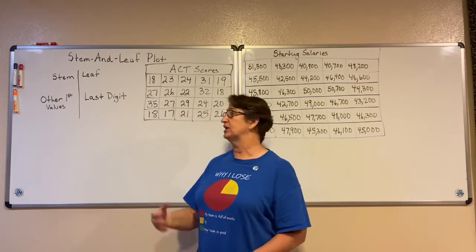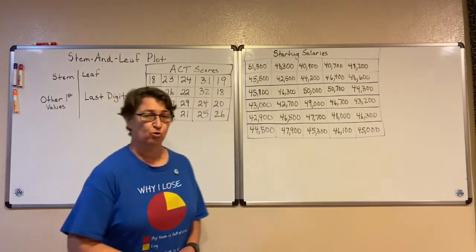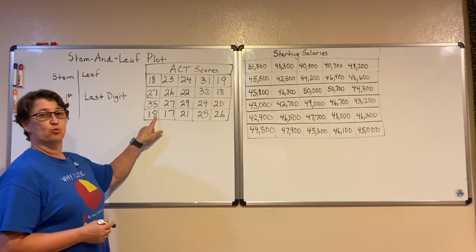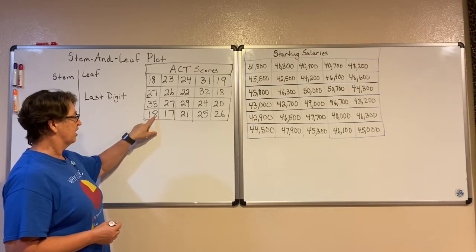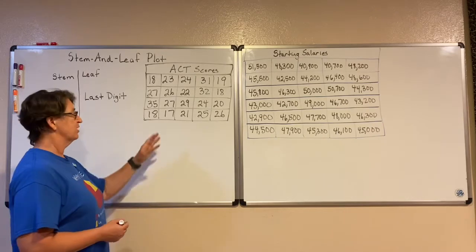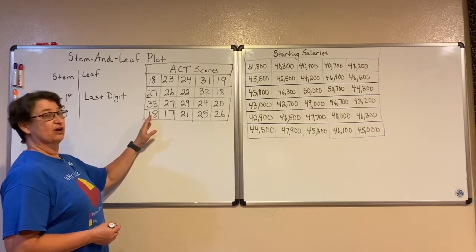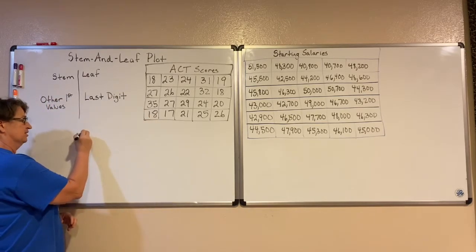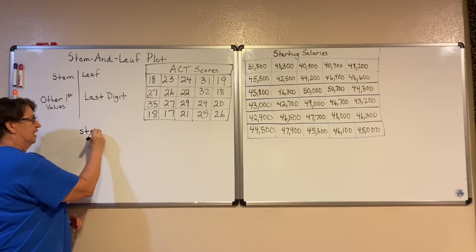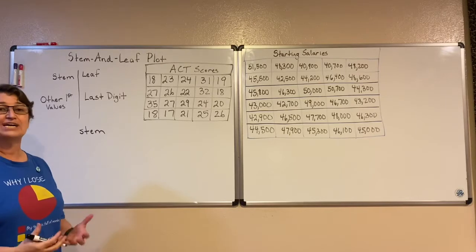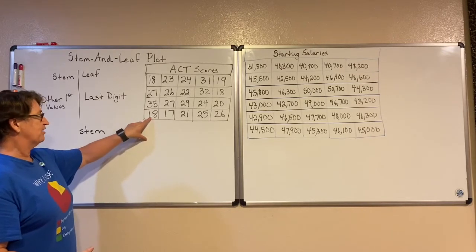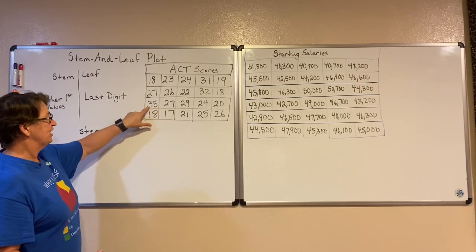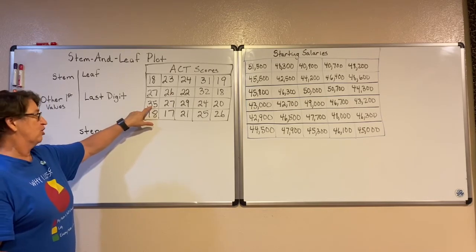Let me start by creating one with these ACT scores. The last important digit of our data values is in the ones place, so the ones place will be our leaves. The remaining beginning numbers — the tens place — will be our stem. The stems are really our categories or bins. In this case, we're going to have tens, twenties, and thirties as our categories.